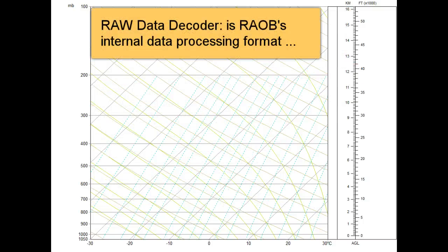The second unique data format is RAOB's raw data decoder. All sounding data that RAOB decodes is converted into this raw format for all internal data processing. Its format is also detailed in the user manual and on the RAOB website.